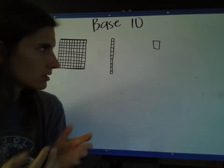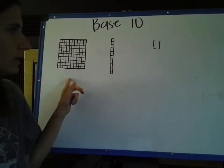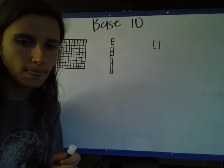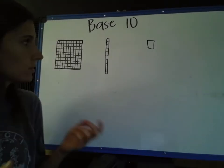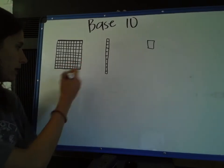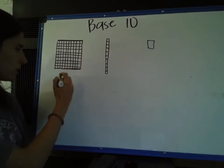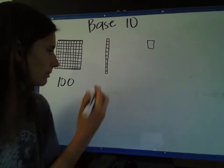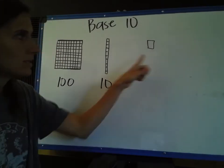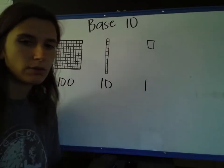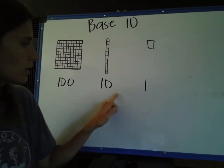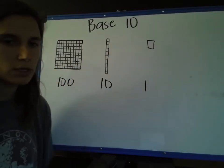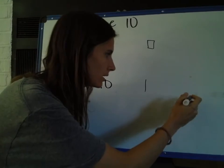So we're going to start out here with first a simple number. So we have 1 hundred, 1 ten, and 1 one. So what we're going to do is we're going to count those numbers first. We know that we have 100 because we see our 100 blocks. Then we see that we have 10, and we only have 1 of them, so we know that it represents 10. And then we see a 1, and we only have 1, so it represents 1. So we have 100, 110, 111. So our number right here is 111.